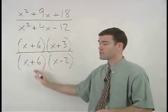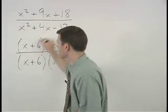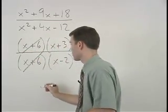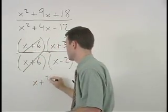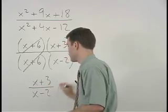Notice that our x plus 6's can now cancel out. And we're left with x plus 3 over x minus 2.